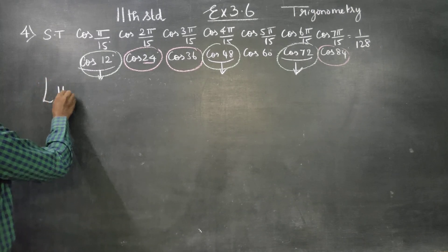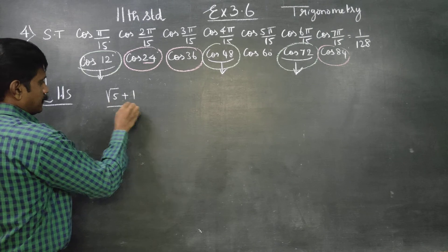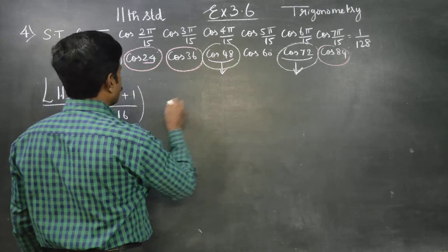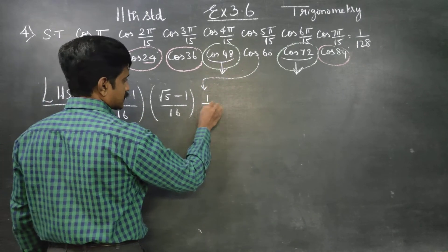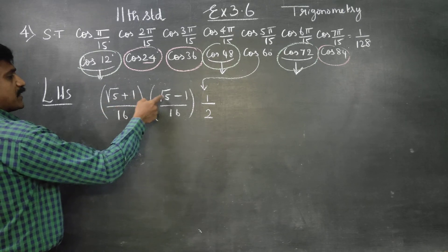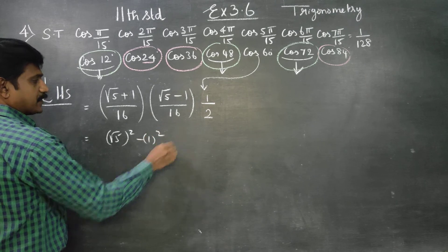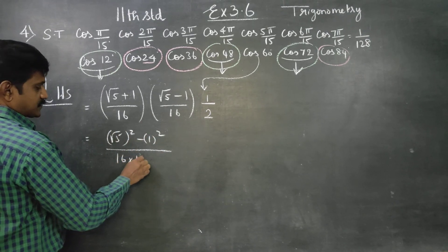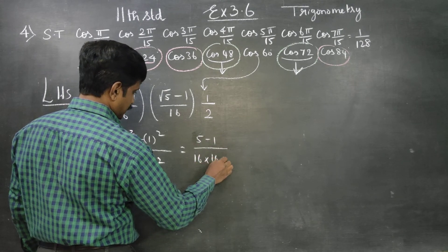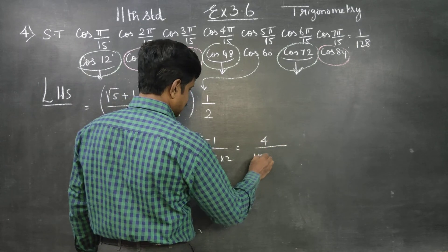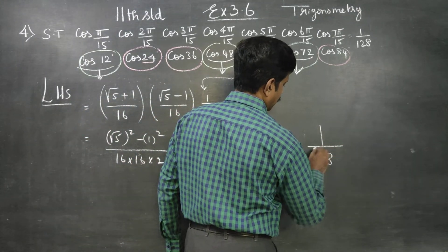Now I will start with my LHS. Using a plus b into a minus b, that is a² − b², we get [(√5 + 1)/16]·[(√5 − 1)/16] = (√5² − 1²)/(16 × 16 × 2) = (5 − 1)/(16 × 16 × 2) = 4/(64 × 2). Your answer will be 4 by 512, which equals 1 by 128. This is your RHS.